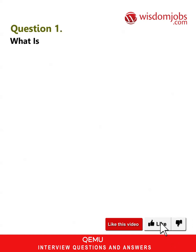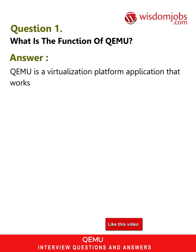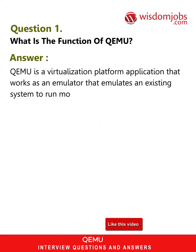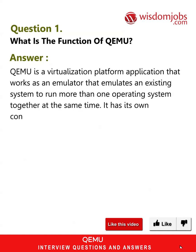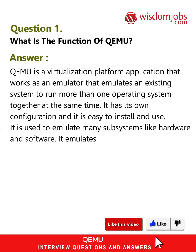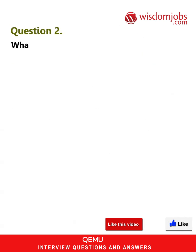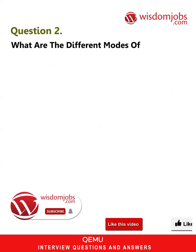Question 1: What is the function of QEMU? Answer: QEMU is a virtualization platform application that works as an emulator. It emulates an existing system to run more than one operating system together at the same time. It has its own configuration and is easy to install and use. It is used to emulate many subsystems like hardware and software, and emulates processes like multi-processing systems.